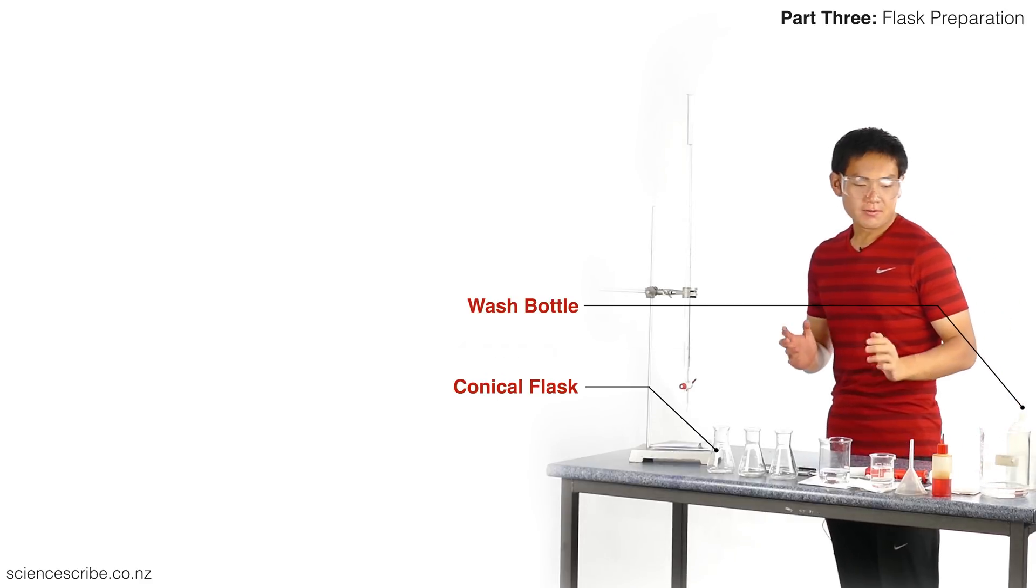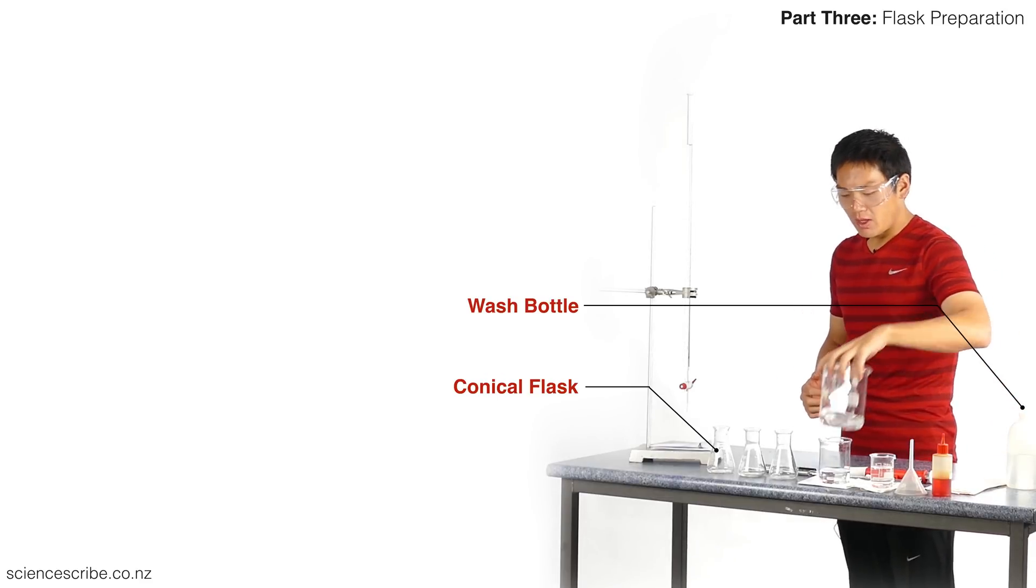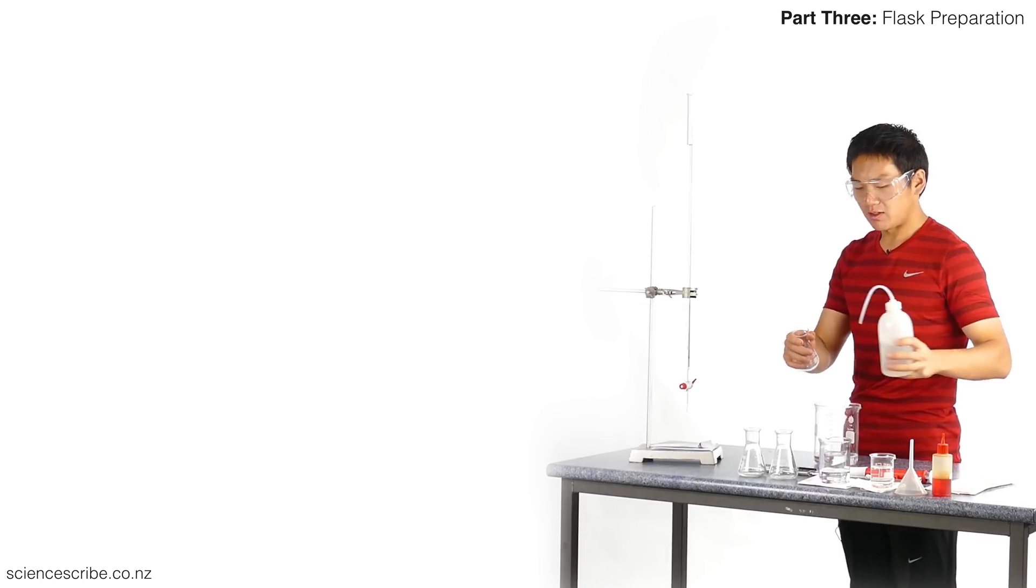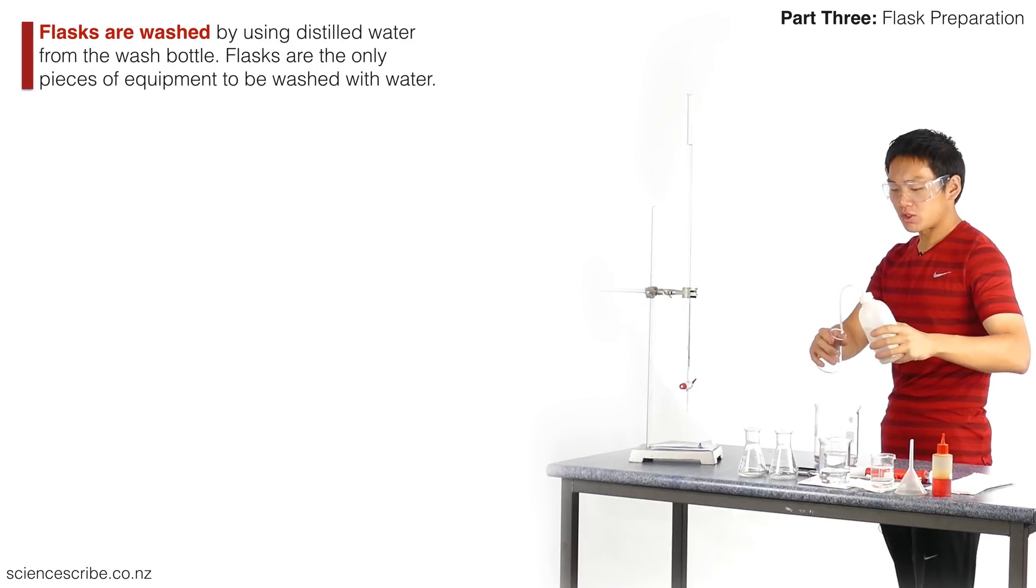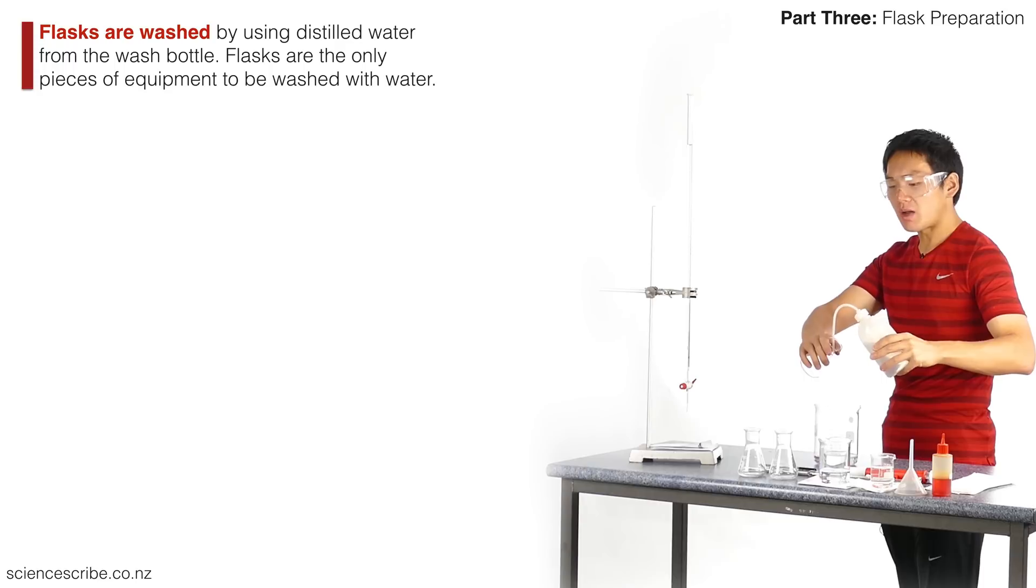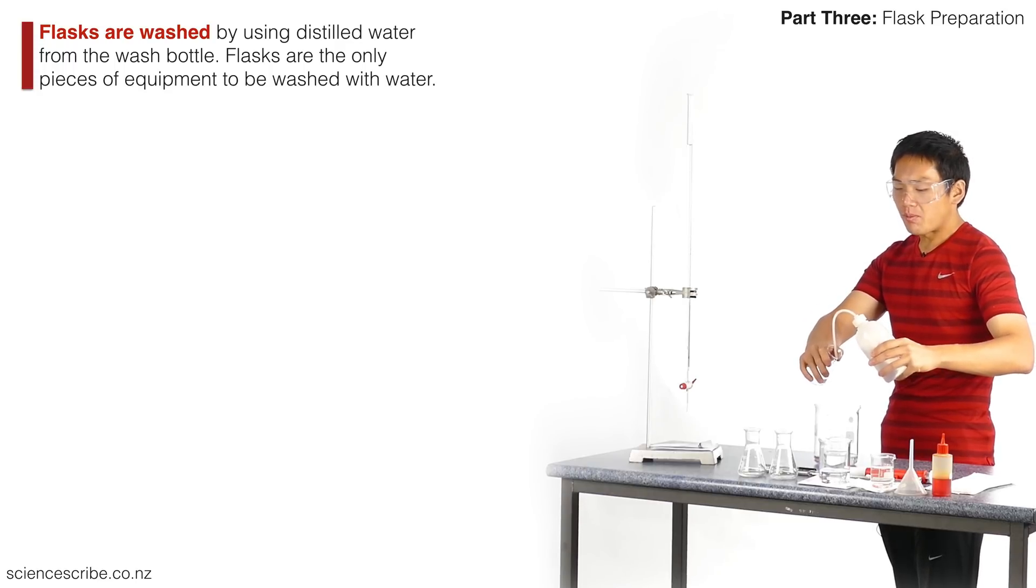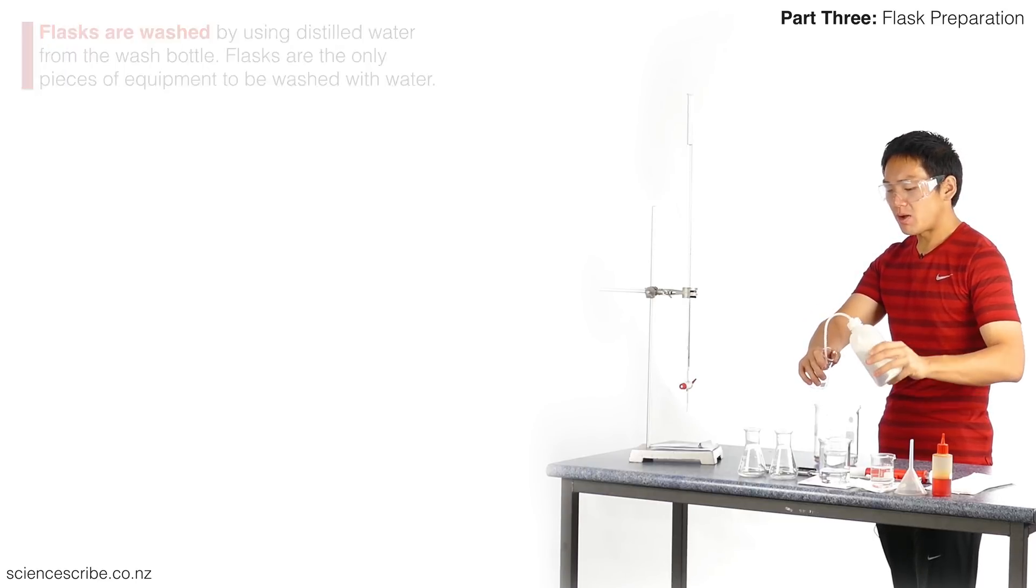To prepare our flasks, the first thing we're going to do is wash them. Flasks are the only thing that we wash with distilled water from our wash bottle. I'm going to squeeze down on my wash bottle and at the same time rotate my flask while positioning the end so that I get all the walls on the inside.